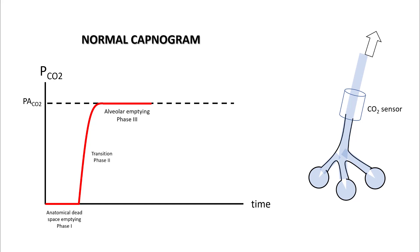As you continue to exhale, alveolar emptying will occur and the CO2 sensor will plateau out at alveolar CO2. This is phase three. When you start inhaling back again, there is no CO2 in that air, so your capnogram will come back to zero.